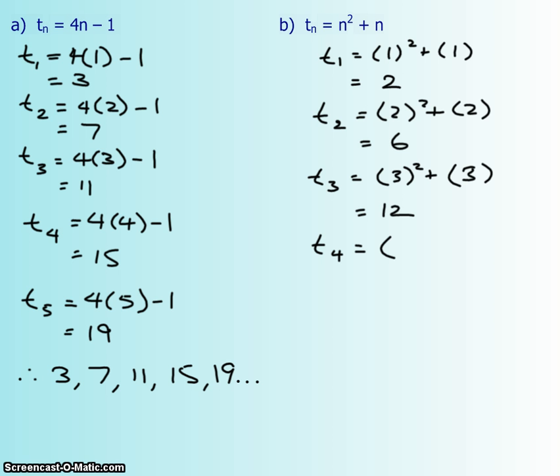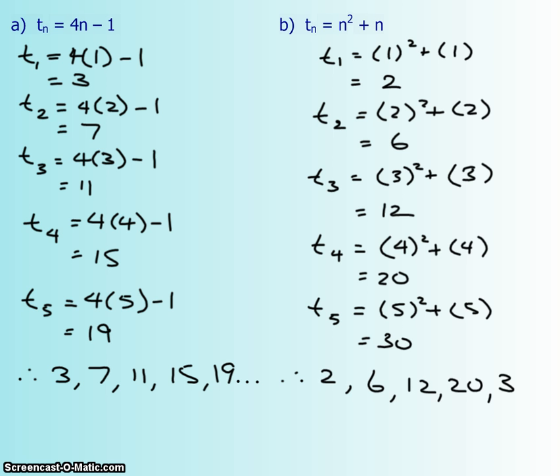And t₄, 4 squared plus 4, is 20. And then your fifth term is 30. So, therefore, your first five terms in this sequence is 2, 6, 12, 20, and 30.